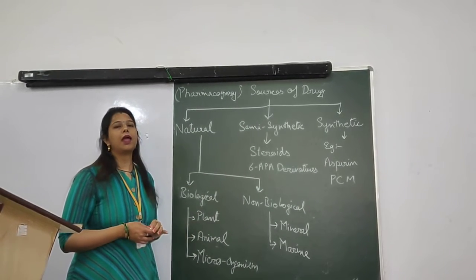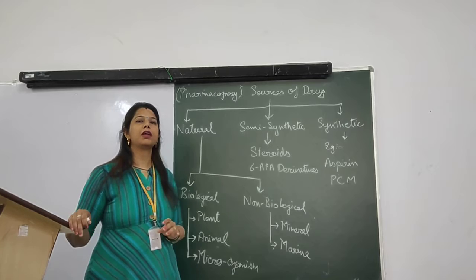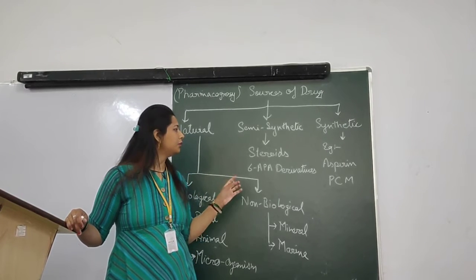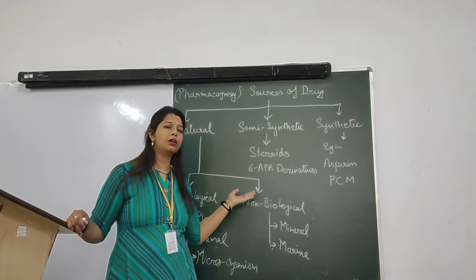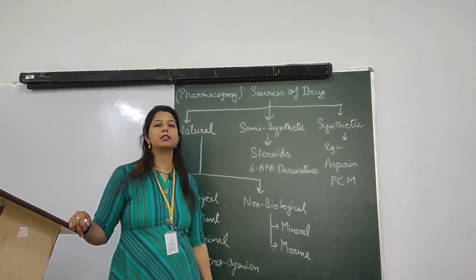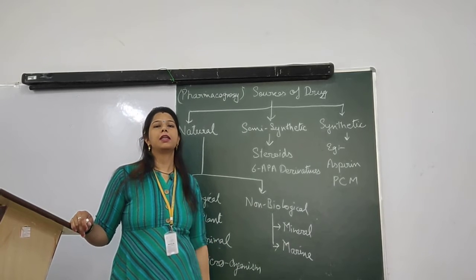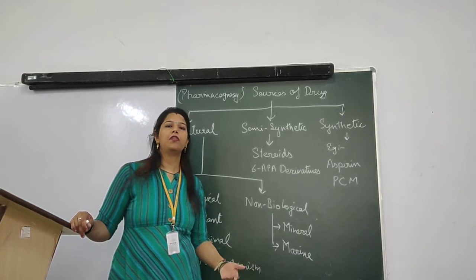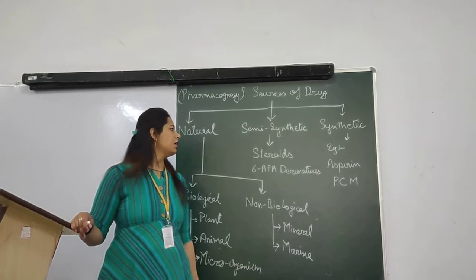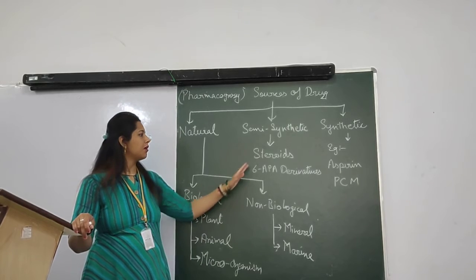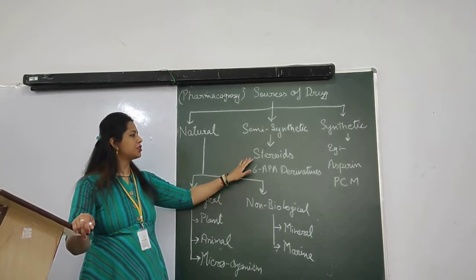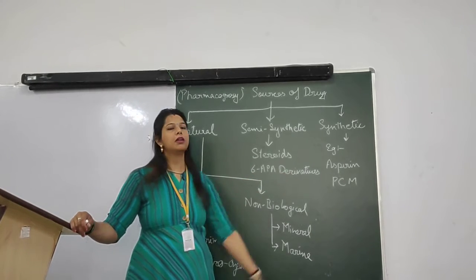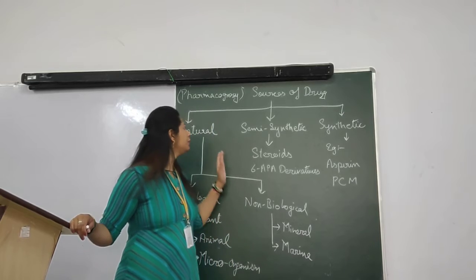Semi-synthetic sources are those in which we collect the chemical constituents from herbal drugs, and then they are synthetically derived for preparation of medicines. For example, steroids and certain other compounds used for diabetes.